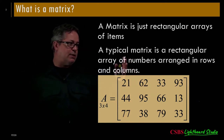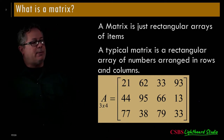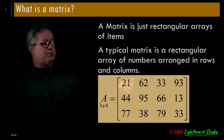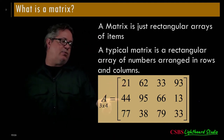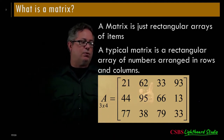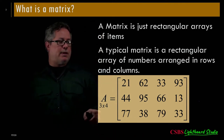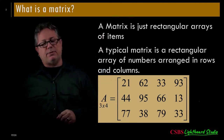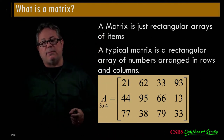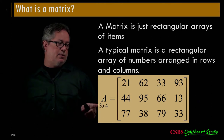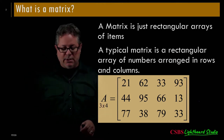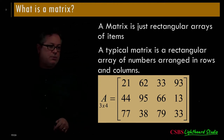A typical matrix is a rectangular array of numbers arranged in rows and columns. In this case, we have three rows and four columns. We often use capital letters to indicate we're talking about a matrix. With the numbers below indicating dimensions, rows come first and columns second — so this is a 3 by 4 matrix: 3 rows, 4 columns.